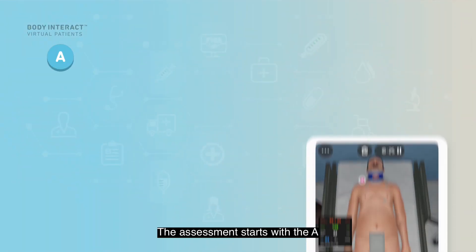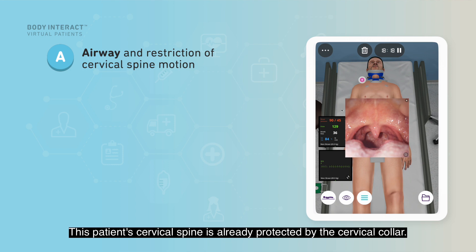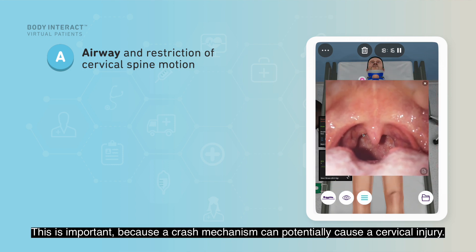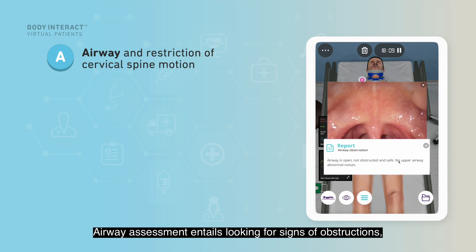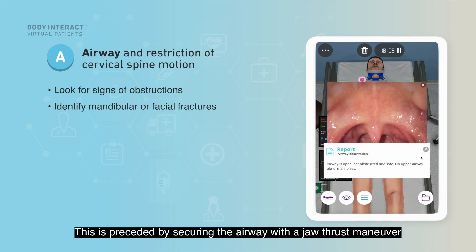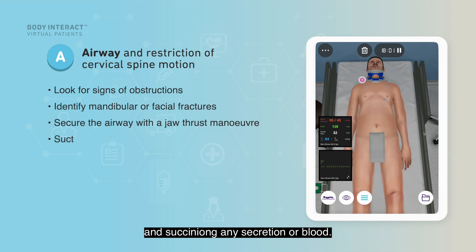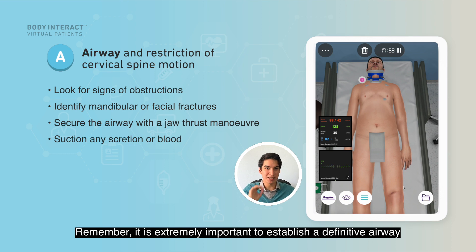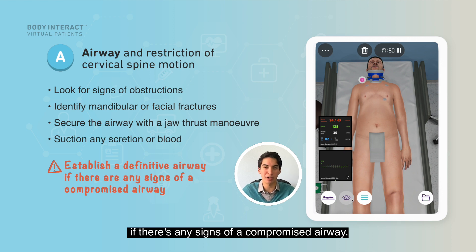The assessment starts with A, which stands for airway and restriction of cervical spine motion. This patient's cervical spine is already protected by the cervical collar — important because a crash mechanism can potentially cause a cervical injury. Airway assessment entails looking for signs of obstruction and identifying mandibular or facial fractures. This is addressed by securing the airway with a jaw thrust maneuver and suctioning any secretions or blood. Remember, it is extremely important to establish a definitive airway if there is any sign of a compromised airway.